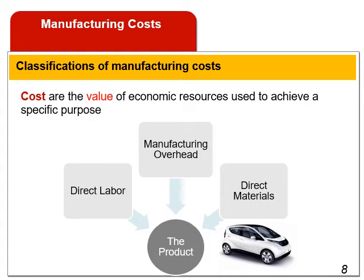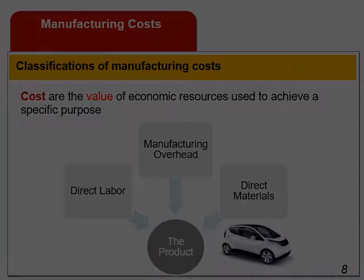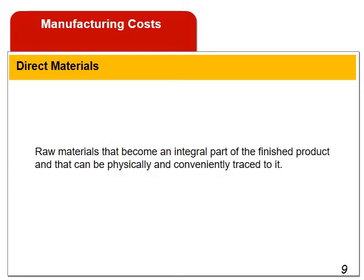Cost is the value of economic resources used to achieve a specific purpose. Manufacturing costs are usually grouped into three main categories: direct materials, direct labor, and manufacturing overhead. These costs are incurred to make a product. Direct materials are raw materials that become an integral part of the finished product and that can be physically and conveniently traced to it.